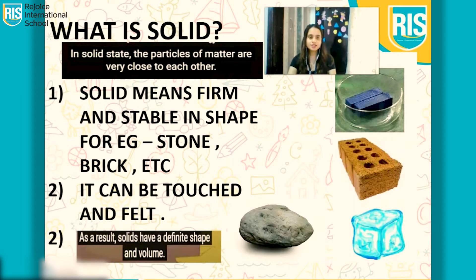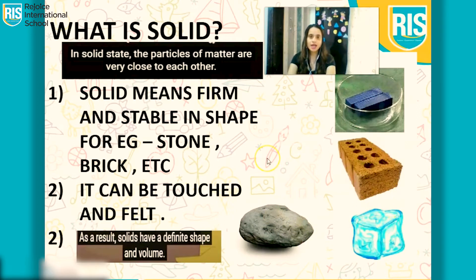We can touch and feel it. As a result, solids have a definite shape and a volume. If you cannot change the volume and the shape, it is very firm and stable. Over here you can see the picture of stone, ice cube, bricks. The particles of matter are very close to each other.